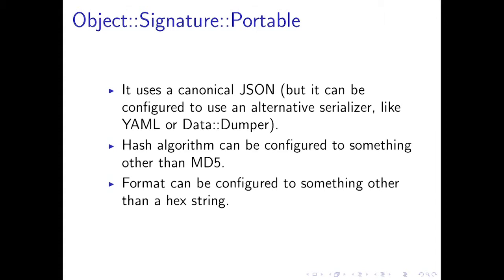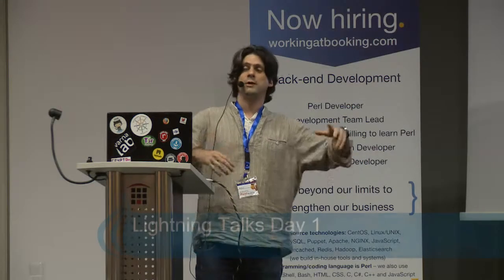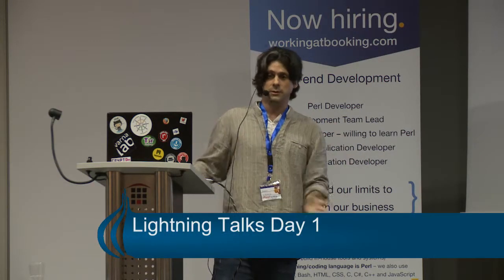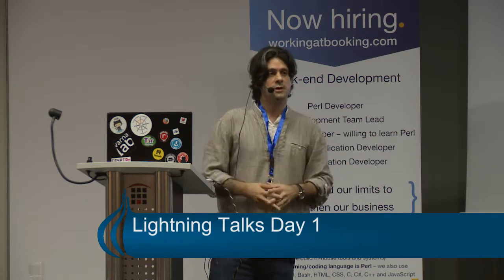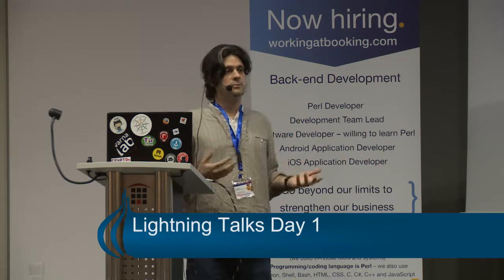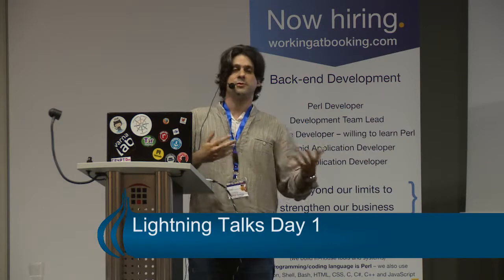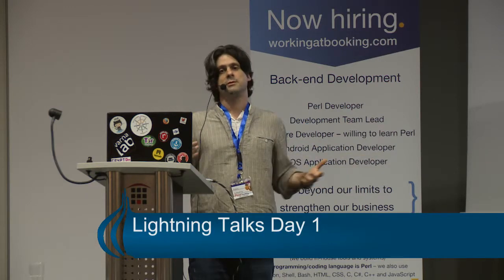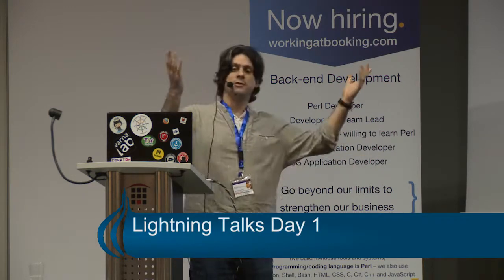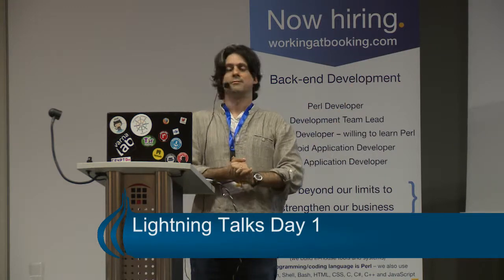The example we use this for is the properties that we have on our website. We print brochures, but if somebody changes something on the website, we want to automatically generate a new brochure that we send to our printer staff. Because we have multiple systems and different architectures, we need consistent signatures. That's it, thank you.